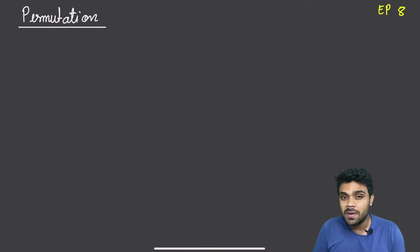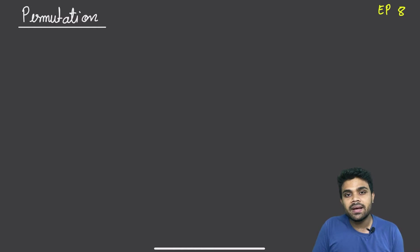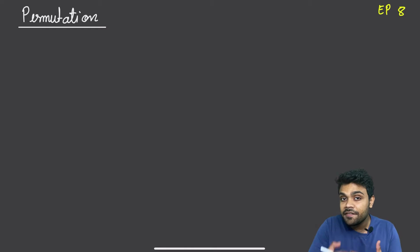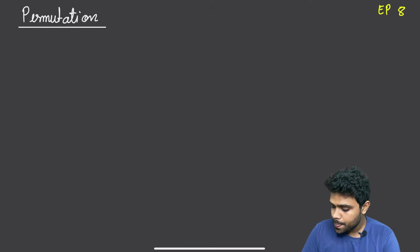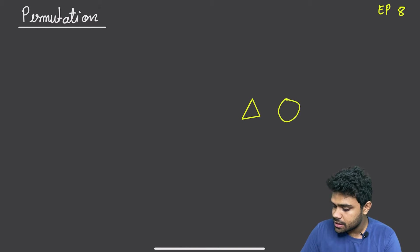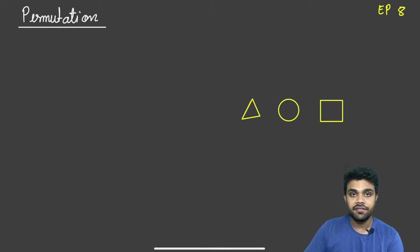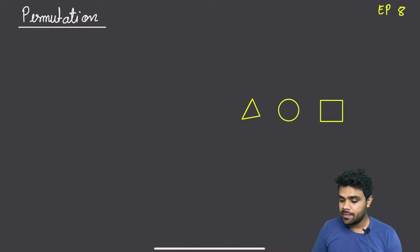Now what actually is permutation? I know you have studied about it in school, but let me recall it again. So let's say we have a few elements, and the different ways in which we can arrange these elements is called permutation. For example, let's keep three elements here: a triangle, a circle, and a square. In how many ways can we arrange these elements?